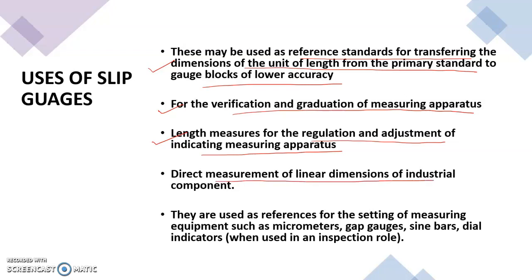Then direct measurement of linear dimensions of industrial components. Some gaps can be measured using slip gauges, or height also can be measured using or comparing the height with the known value of slip gauges. Finally, they are used as references for setting of measuring equipment such as micrometers, gap gauges, sine bars, dial indicators, etc.